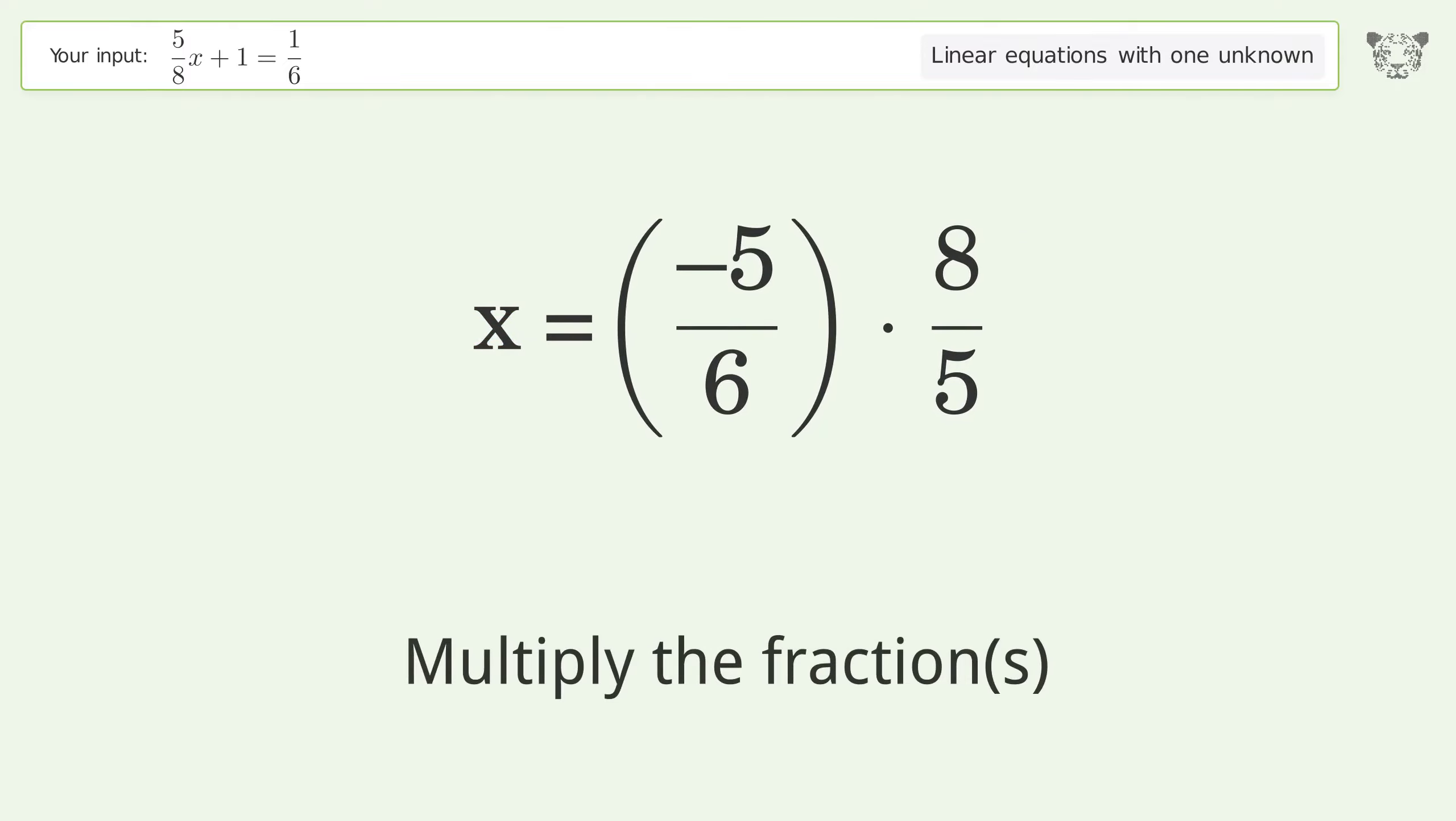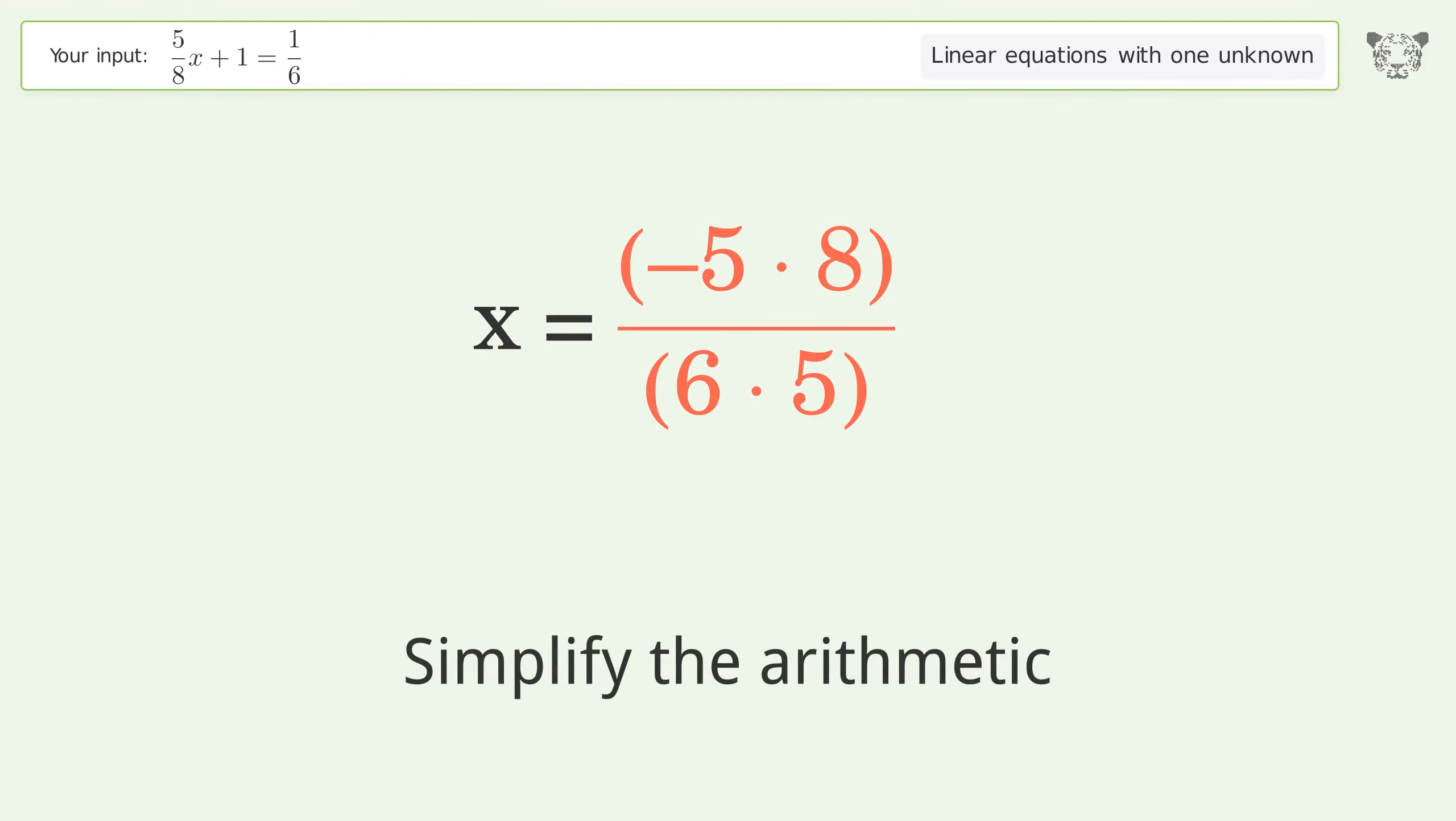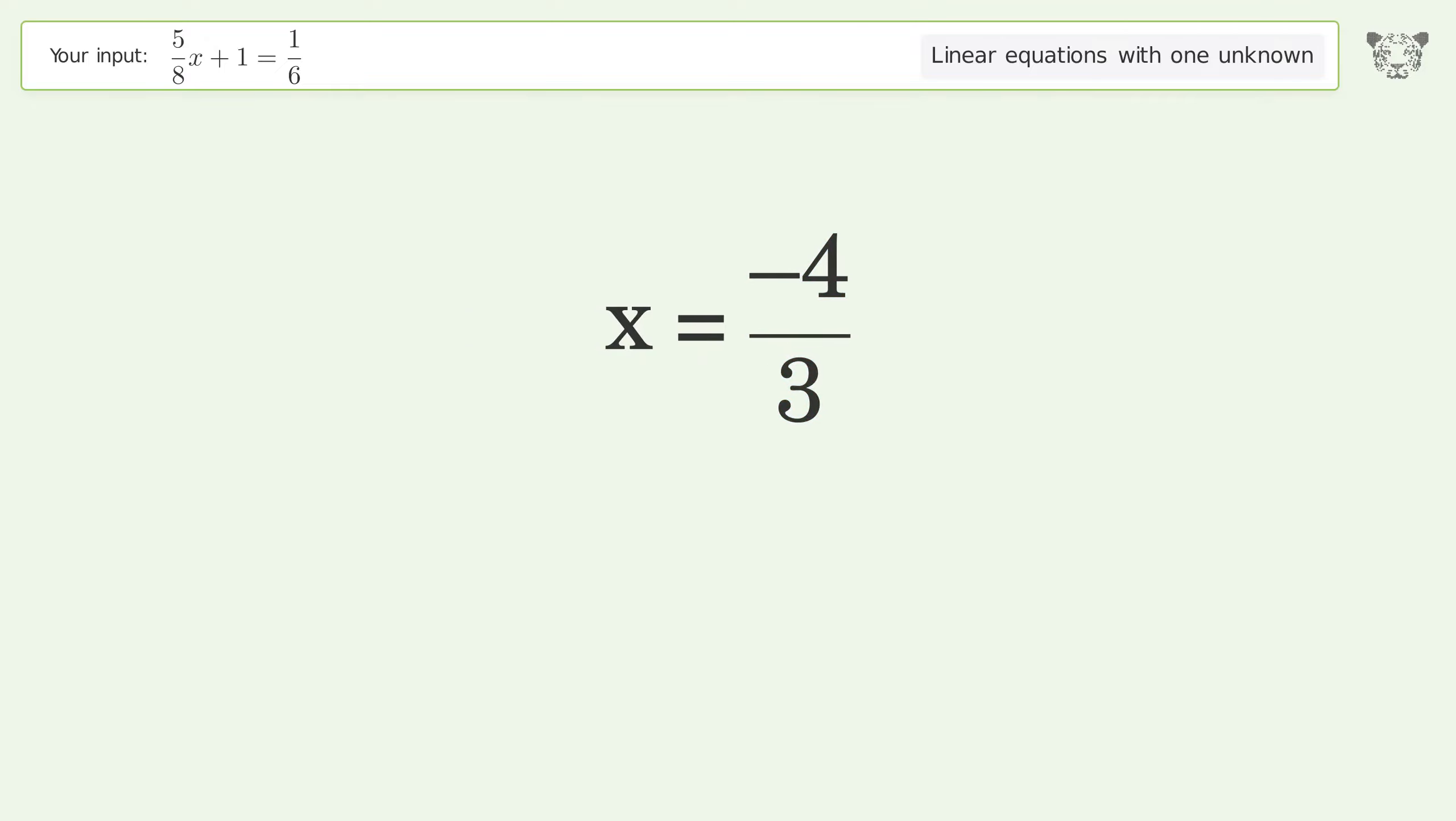Multiply the fractions. Simplify the arithmetic. And so the final result is x equals negative 4 over 3.